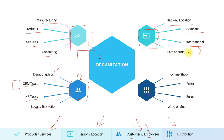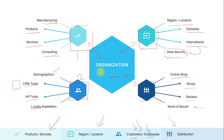As soon as you go international, there's a requirement for data security — you need to maintain data that follows the compliance of that particular country. The last entity for this discussion is the distribution network: a company may have online shops, physical stores, or get referrals via word of mouth. By operating across all these entities, they make money through sales, produce goods and services, and handle customer relationships.